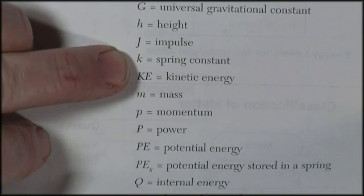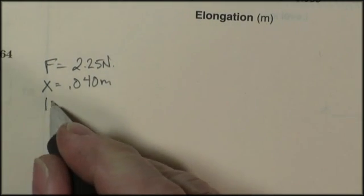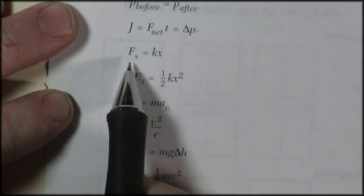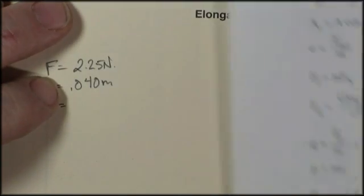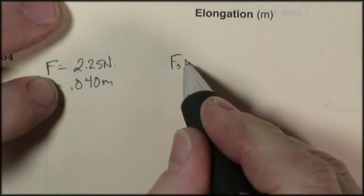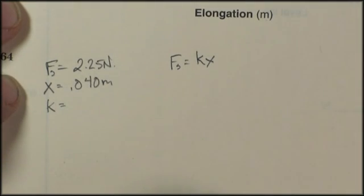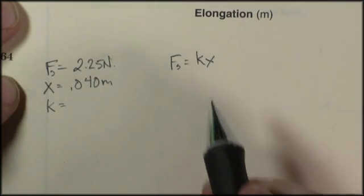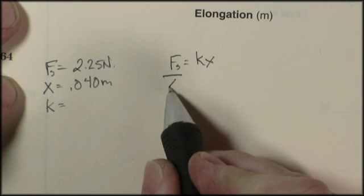According to my formula sheet, k is the spring constant. So I'm looking for k. The formula for force on a spring is equal to k times x. So I can write the formula down. Force on a spring is equal to k times x. And they want me to solve for k, so I do algebra. I want k by itself, so I divide both sides of the equation by x.